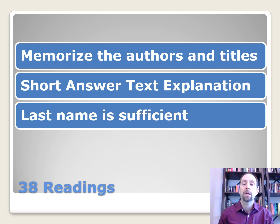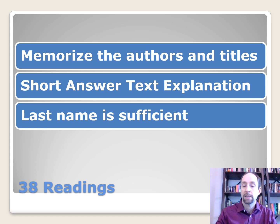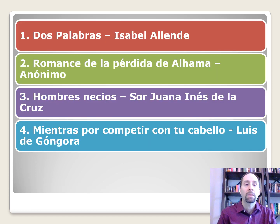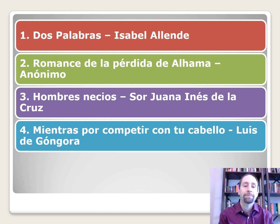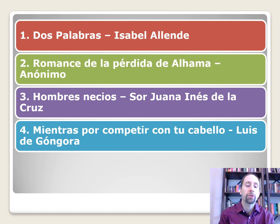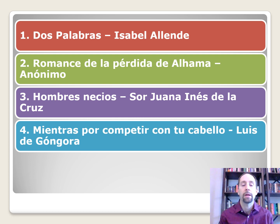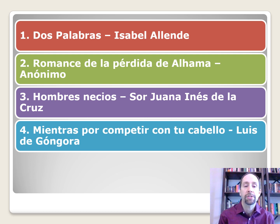If you can remember the full name, great, but the last name alone will get you full credit. So keep it short, simple, and sweet. Number one, in no particular order: Dos Palabras by Isabel Allende. Romance de la Pérdida de Alhama, which is anónimo — it comes from the medieval time period. Since it was so long ago, it was probably originally an oral tradition, and whoever created it has been lost. Eventually somebody put it down on paper.